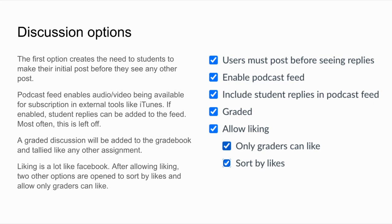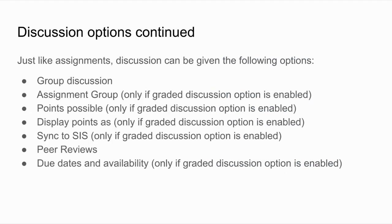Liking, once enabled, shows more options: only graders can like, and sort by likes. Sorting by likes means the more likes a post gets, the higher on the page it appears. If you make a discussion graded, many other options become available: assignment group, points possible, display points as, due dates, and availability. If you don't make it graded, you still have group discussion and peer reviews, just like in assignments.